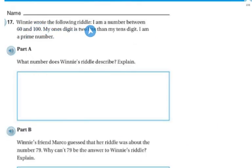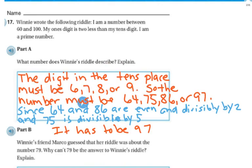Winnie wrote the following riddle. I'm a number between 60 and 100. My 1s digit is 2 less than my 10s digit. I am a prime number. What number does Winnie's riddle describe? Explain. Well, the digit in the 10s place must be a 6, 7, 8, or 9. So the number must be 64, 75, 86, or 97. But since 64 and 86 are even and divisible by 2, they can't be it. So it can't be 64 or 86. And since 75 is divisible by 5, it can't be it. So the answer has to be 97.